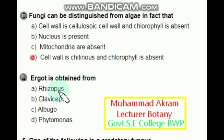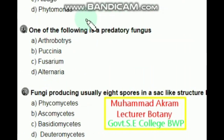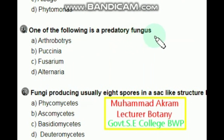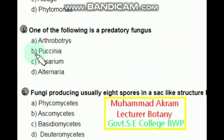One of the following is a predator fungus. Arthrobotrys? Yes. Puccinia? No. Fusarium? No. Alternaria? No. The right option is option A — Arthrobotrys.